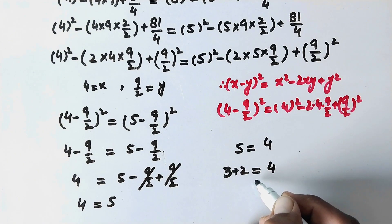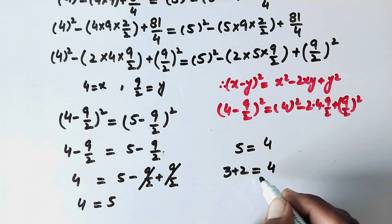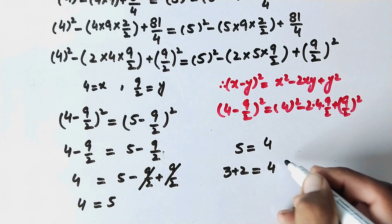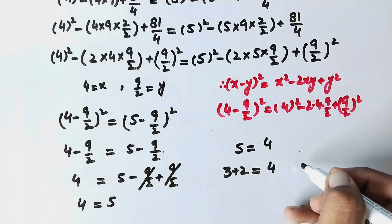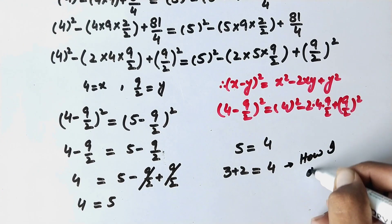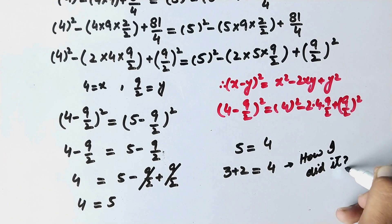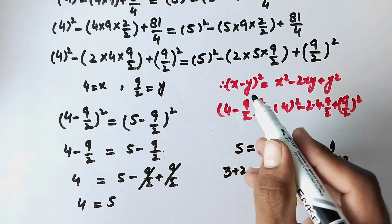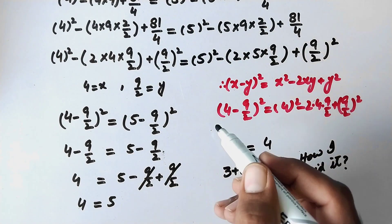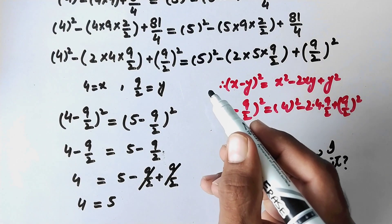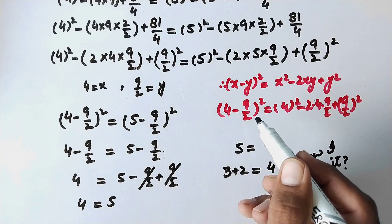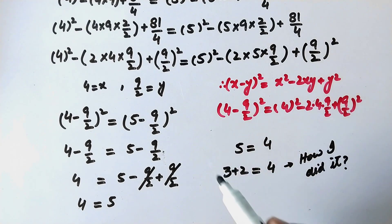This is what we had to prove. I have proved 3 plus 2 equals 4 — but the question is, how did I do it? Of course, somewhere in these calculations I did not follow the rules of mathematics. These calculations are simple but tricky. Can you find where I did not follow the rule of mathematics?